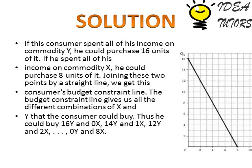By joining these two intercepts we get the consumer's budget constraint line, or budget line. The budget constraint line gives us all the different combinations of X and Y that the consumer could buy. For example: 16 units of Y and 0 units of X; 14 units of Y and 1 unit of X; 12 units of Y and 2 units of X; or 0 units of Y and 8 units of X.